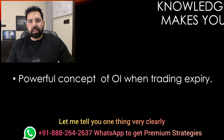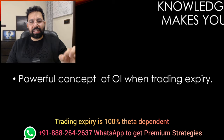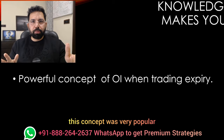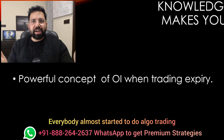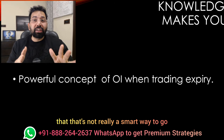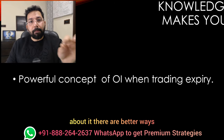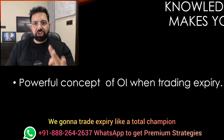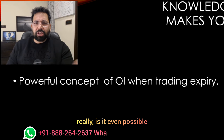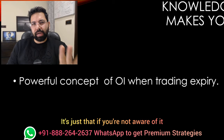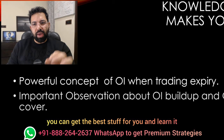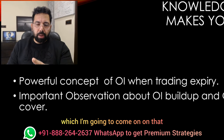Let me tell you one thing very clearly: trading expiry is 100% theta dependent. One year back, two years back, this concept was very popular. Everybody almost started to do algo trading — you sell a 920 straddle and see how things perform. But now you realize that's not really a smart way to go about it. There are better ways. We're going to trade expiry like a total champion without doing an intraday straddle and without even knowing direction. A lot of things are possible. It's just that if you're not aware of it, it's your responsibility. If you think trading is a business, you can get the best stuff and learn it, sprint it to the next level.